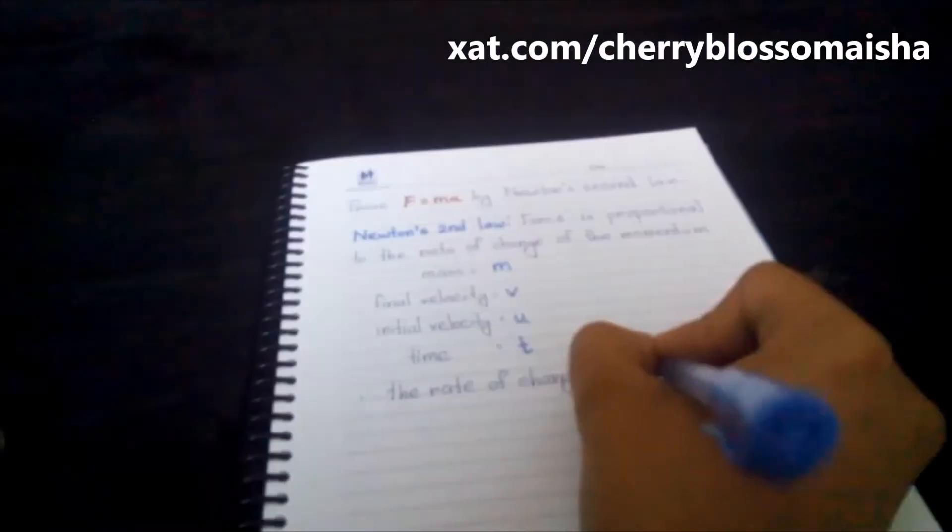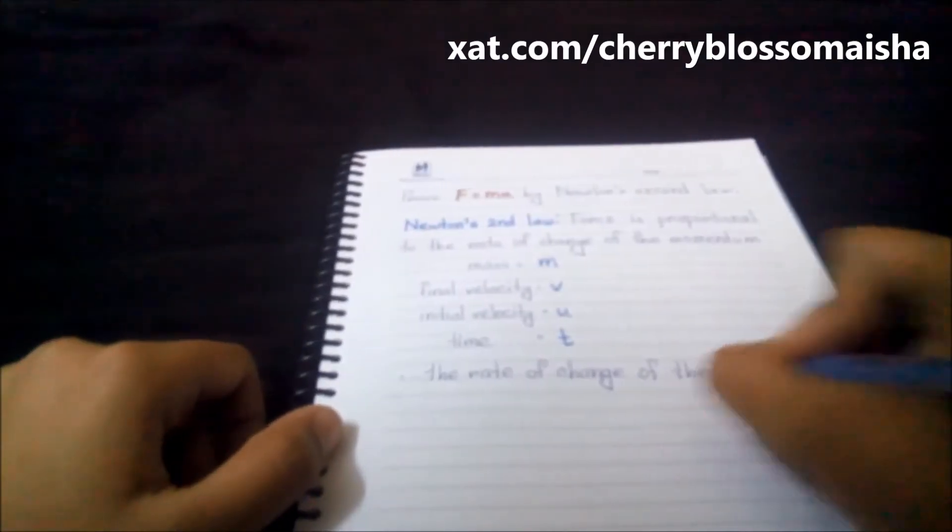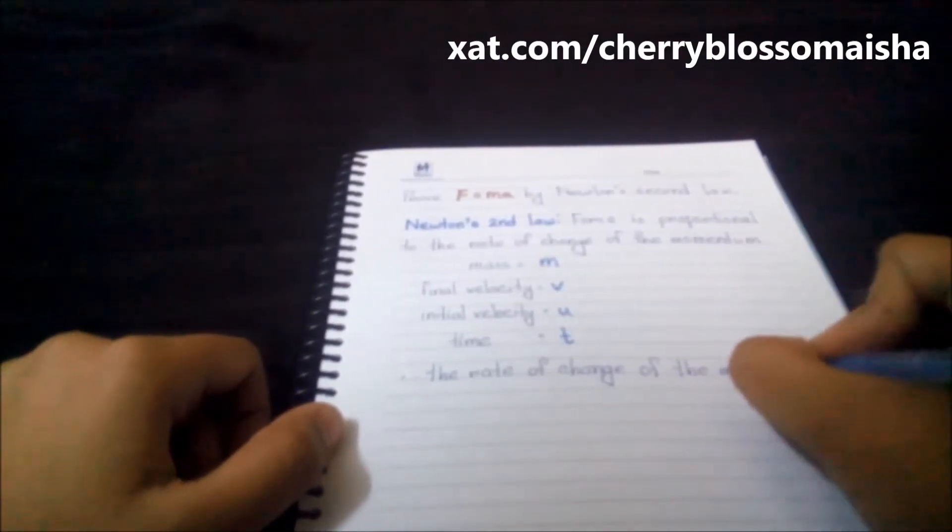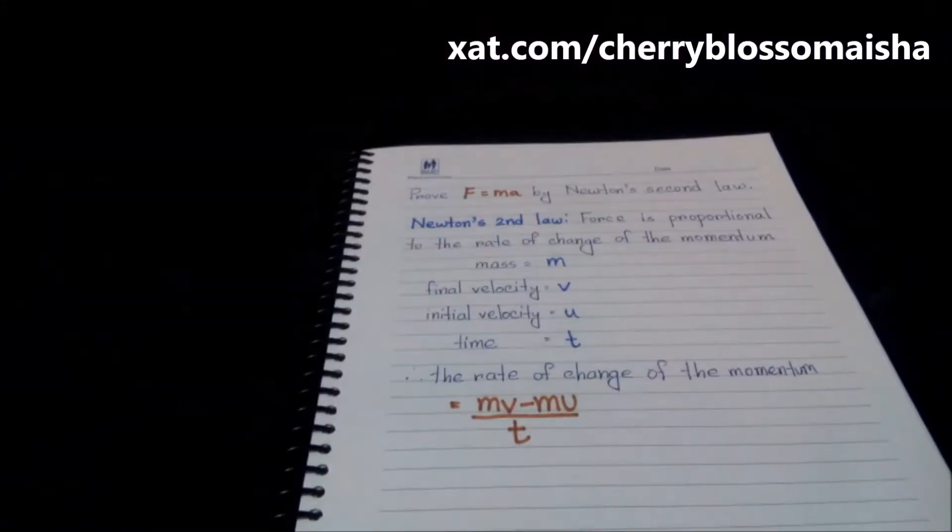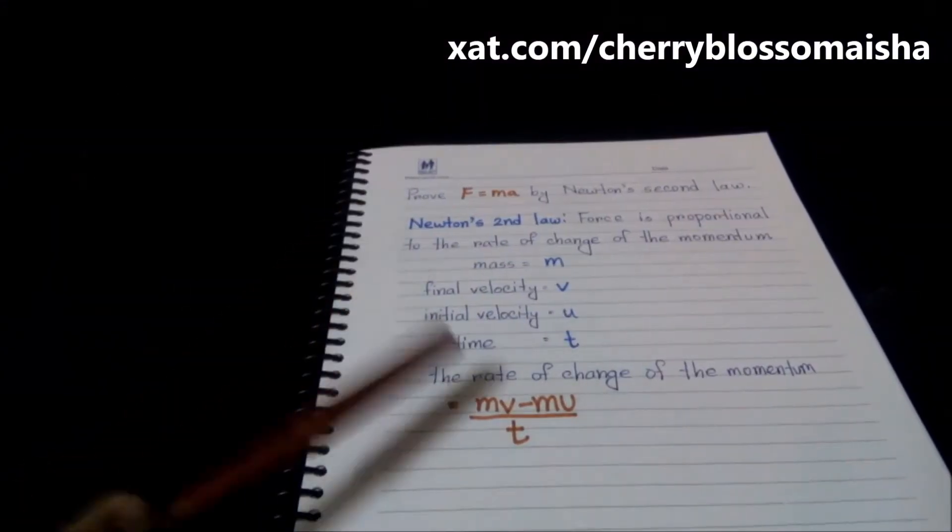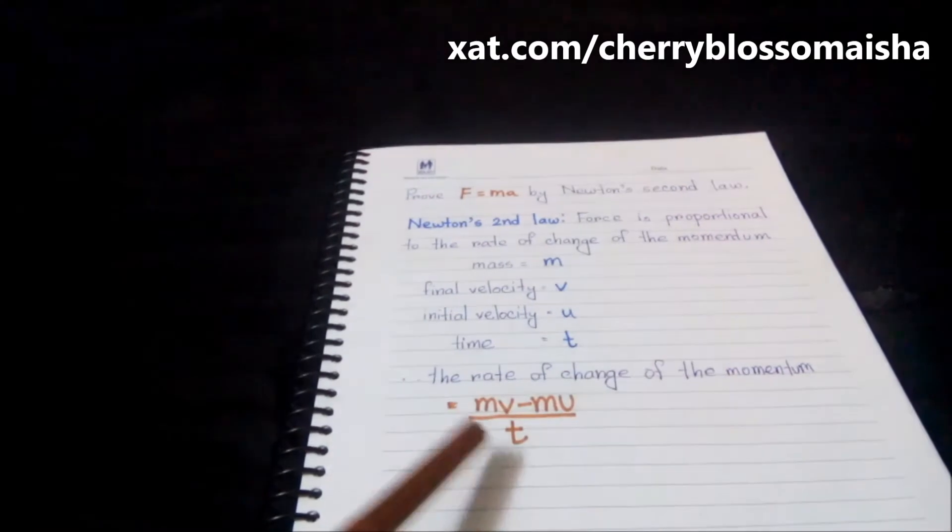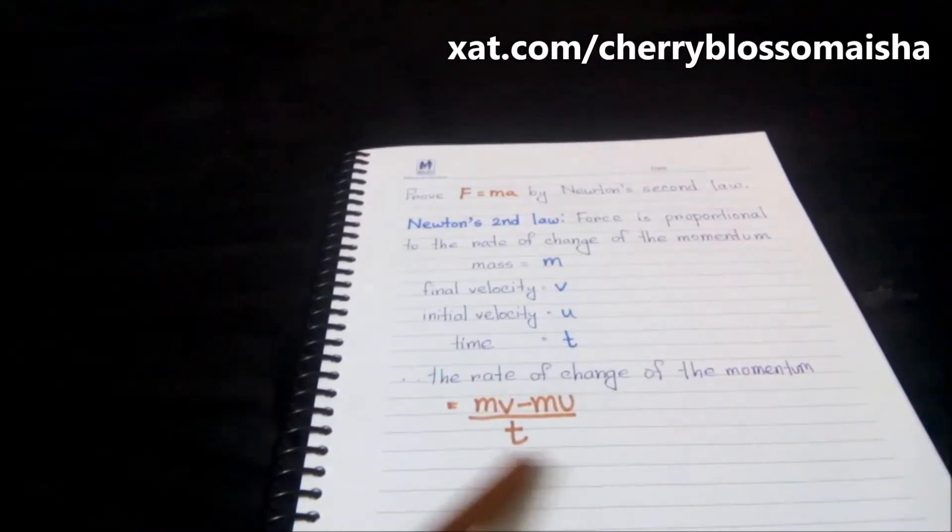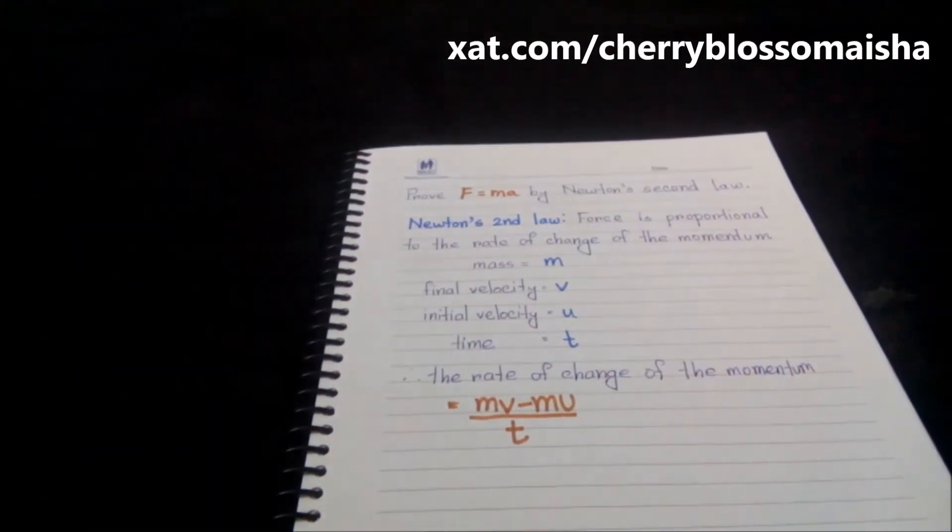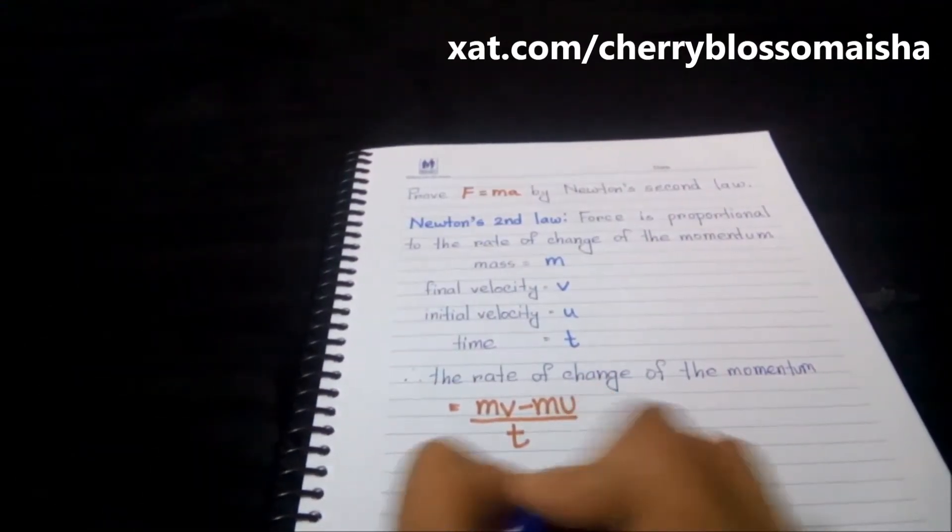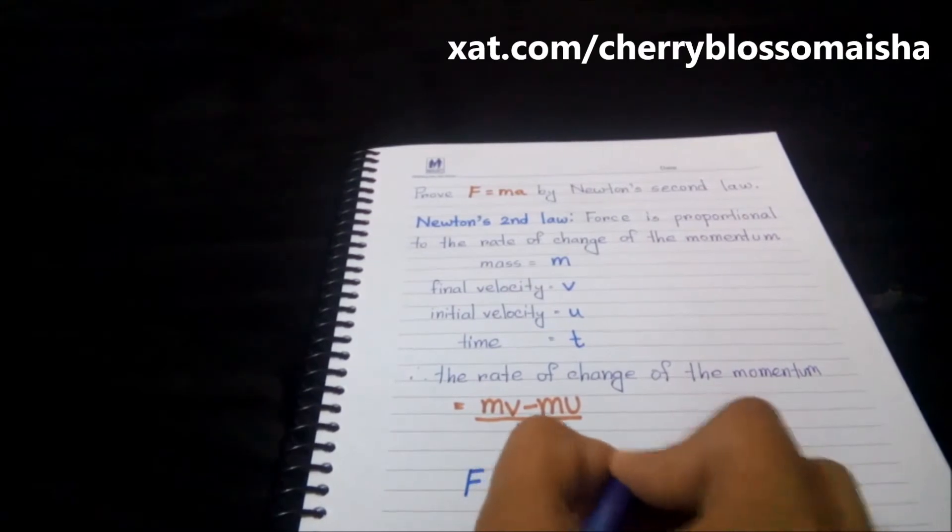Then we can say that the rate of change of the momentum is equal to MV minus MU divided by T. So we can write that F is proportional to MV minus MU divided by T.